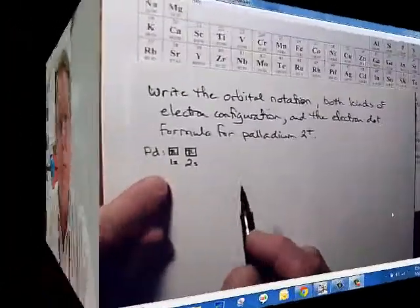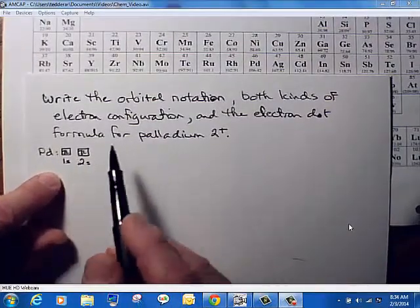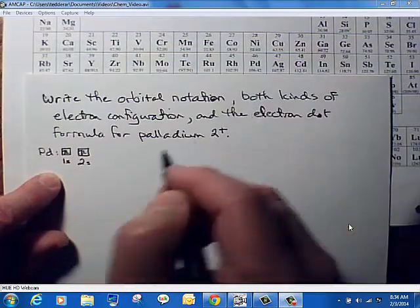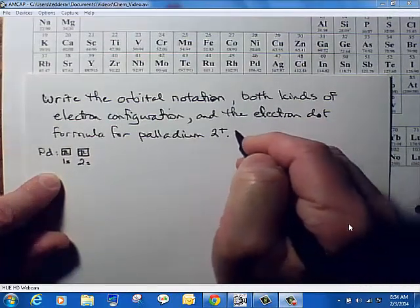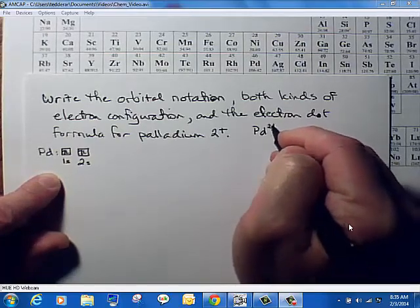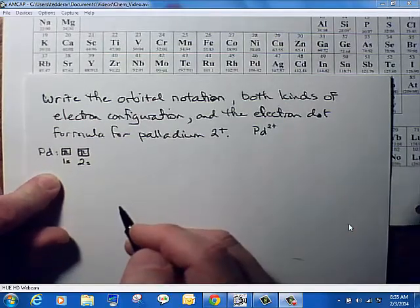Okay, let's take a minute and take a look at the orbital notation, electron configuration, basically the electron structure of the electron cloud for monoatomic ions. We're writing the orbital notation, electron configurations, and the electron dot formula for palladium 2 plus. That means we have palladium with a 2 plus charge. You write that as Pd superscript 2 plus. That's the way you write the symbol.